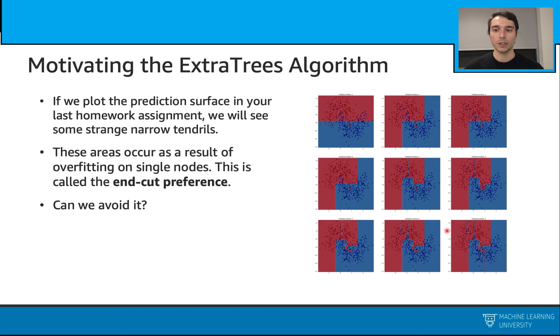For example, this red one, these blue ones, blue ones here, blue ones here. These narrow bands occur because our single nodes can overfit, and this is called end-cut preference.